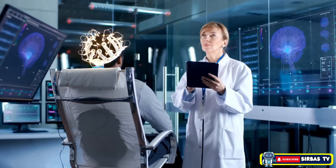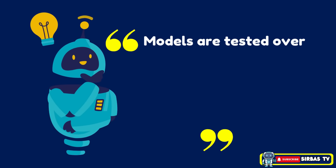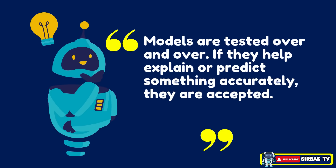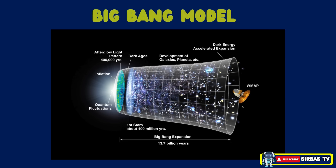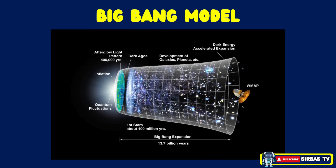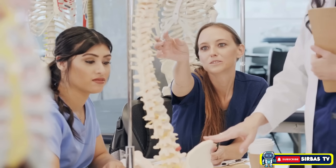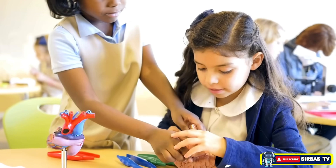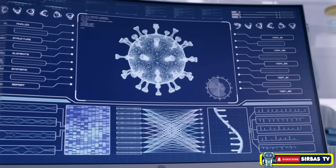Now you might be wondering: how do we know if a model is good? Models are tested over and over. If they help explain or predict something accurately, they are accepted. These widely supported models are called consensus models. A great example is the Big Bang Theory, a model explaining how the universe began. Scientific models may not be the real thing, but they help us get closer to understanding the real world. So next time you see a diagram, a formula, or a globe, remember — you are looking at science's way of making the invisible visible.